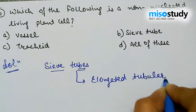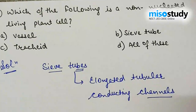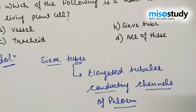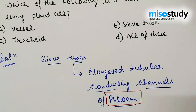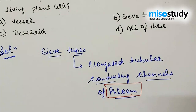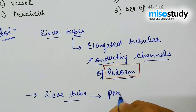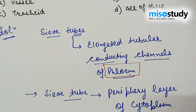Sieve tubes are conducting channels of phloem tissue. In vascular bundles, there are two parts — xylem and phloem. Xylem conducts water and minerals, while phloem conducts food items within plants. Sieve tubes have a peripheral layer of cytoplasm and are present without a nucleus — there is an absence of nucleus in sieve tubes.